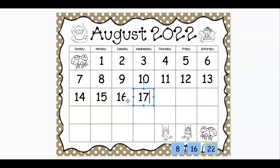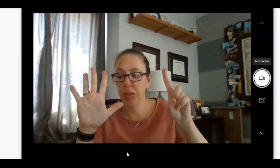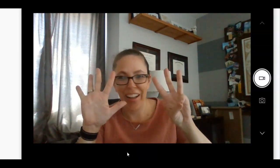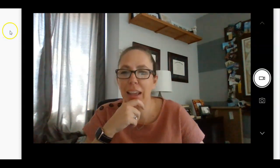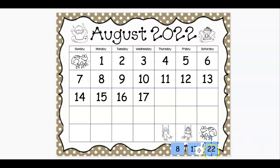All right, when I look at this shortcut way to write our month and date — the month, remember we counted and we said January, February, March, April, May, June, July, August — and we got to the number eight. August is the eighth month, so we put an eight at the beginning. Yesterday we had a 16, so today it's the 17th — we need to put a 17. And then we have that 22. Who remembers what that 22 is for? Two thousand and 22. Very good.